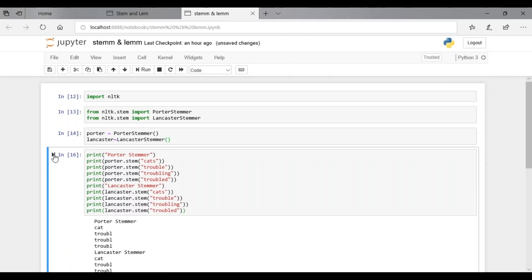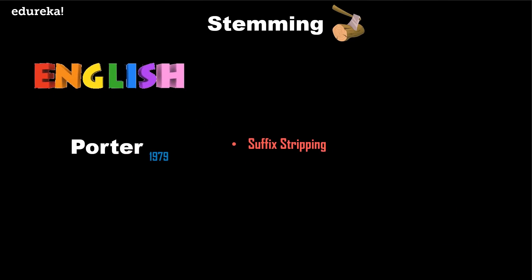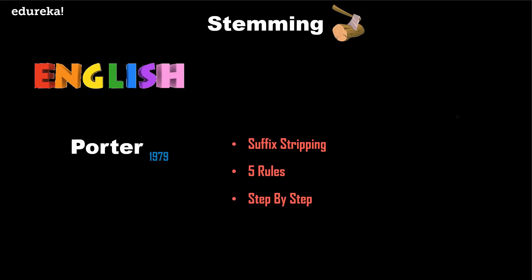Porter stemmer uses suffix stripping to produce stems. It does not follow linguistics; rather, it applies a set of five rules for different cases in phases to generate stems. This is why Porter stemmer does not often generate stems that are actual English words. It does not keep a lookup table for actual stems but applies algorithmic rules, including rules to decide whether it is wise to strip a suffix. One can generate their own set of rules for any language — that is why Python NLTK introduced Snowball stemmers for creating non-English stemmers.